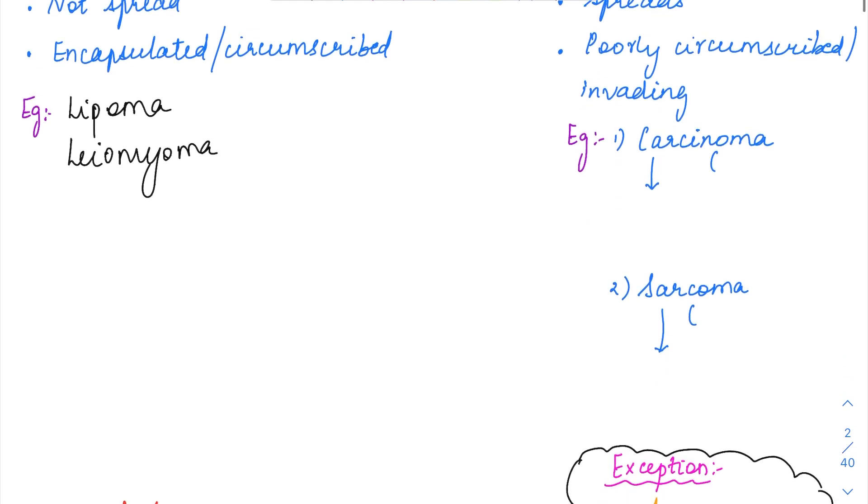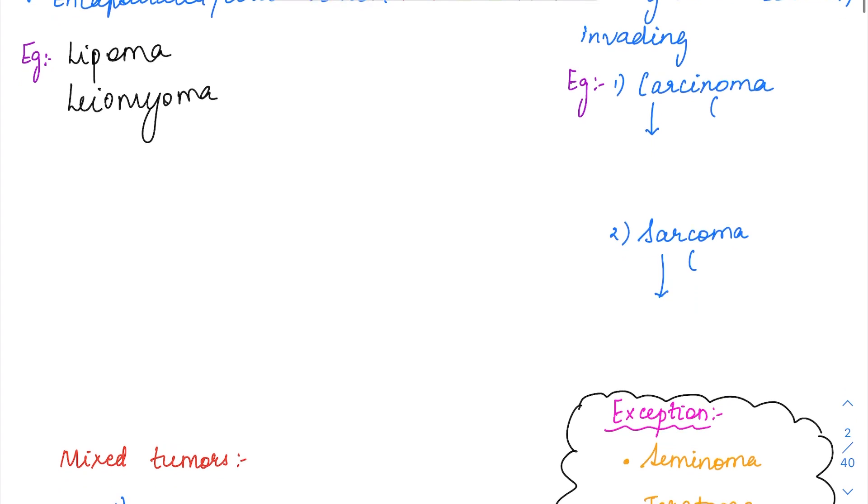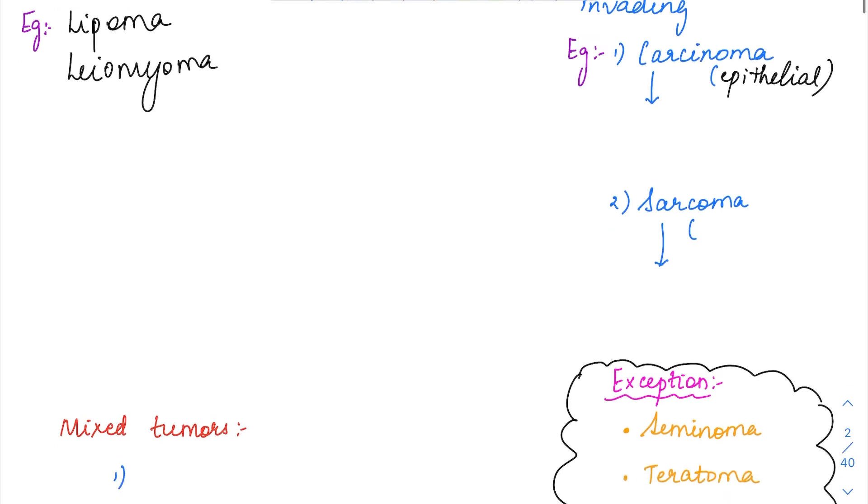Examples of malignancies are carcinoma. We call it carcinoma when it is of epithelial origin. Any epithelial malignancy we call as carcinoma. Examples will be squamous cell carcinoma and adenocarcinomas.